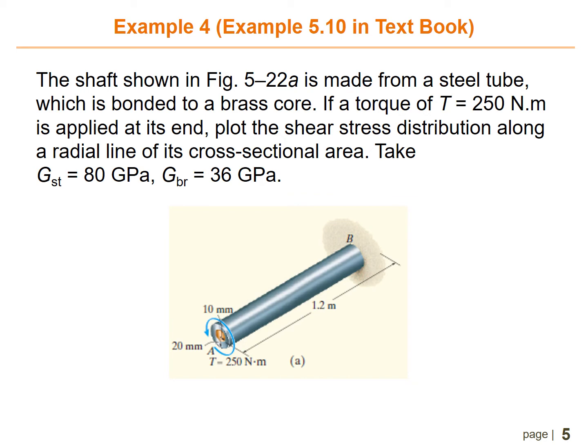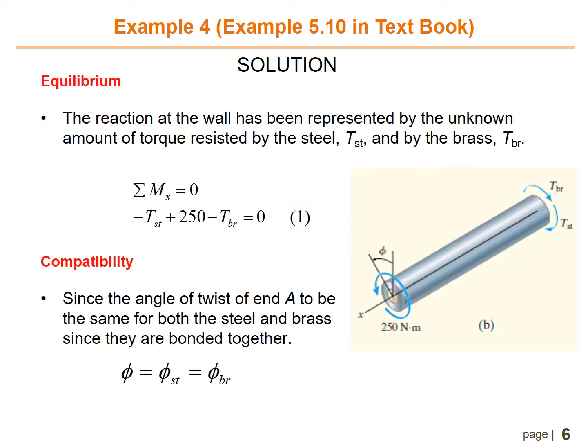For example number four, refer to textbook example 5.10. The shaft shown in figure 5.22a is made from a steel tube bonded to a brass core. A torque of T equals 250 newton-meter is applied at end A. Plot the shear stress distribution along the radial line of its cross-sectional area. G for steel is 80 GPa and G for brass is 36 GPa.